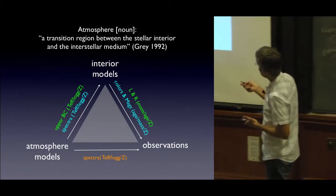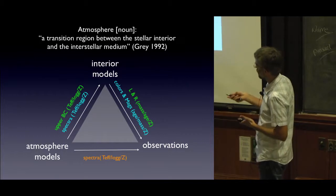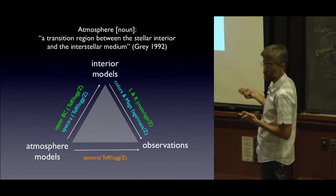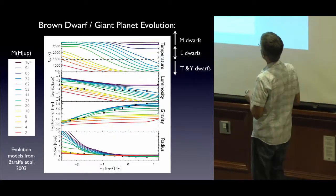The pathway to interpreting observations can go in multiple ways. You can go directly from atmospheres to observations if you have good spectra, or you can go through interior models and try to do something that way.